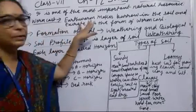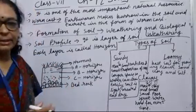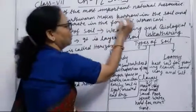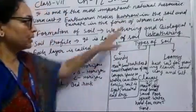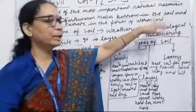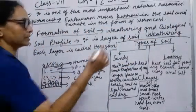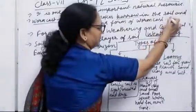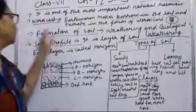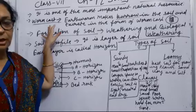The wormcast is found in the soil. It is a spiral-shaped structure in the soil. This structure is called wormcast, and this is very fertile soil.